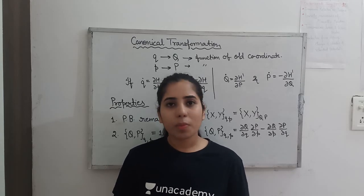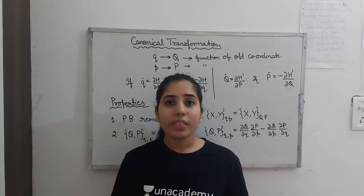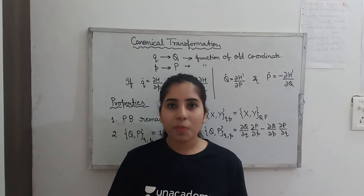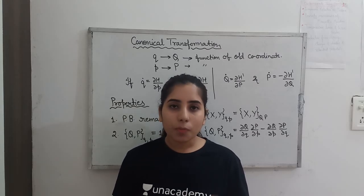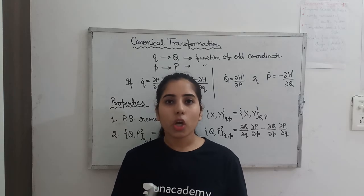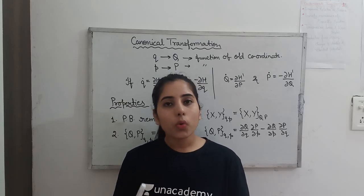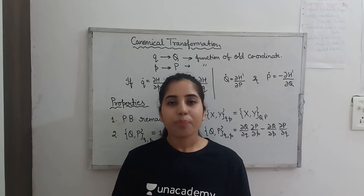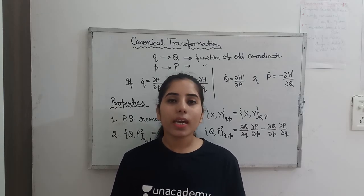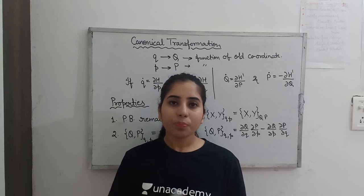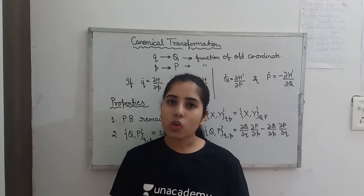Now, we have done this transformation — but how can we say it is a canonical transformation? What condition must be satisfied? You have to keep one thing in mind: if the form of Hamilton's equation of motion corresponding to both the old and the new coordinates is the same, we say that this transformation is a canonical transformation.